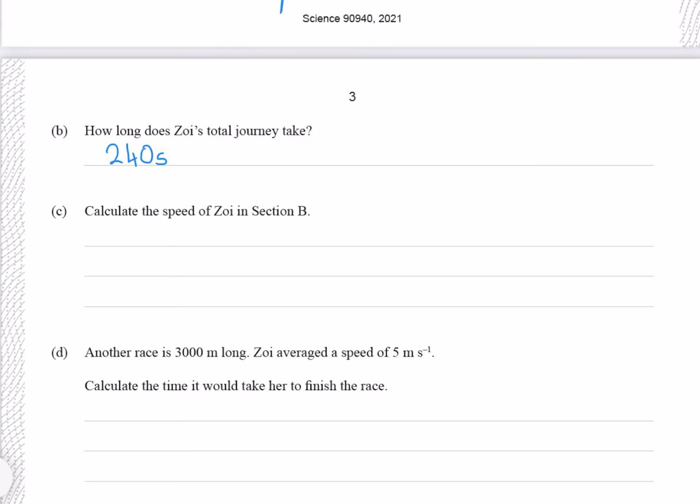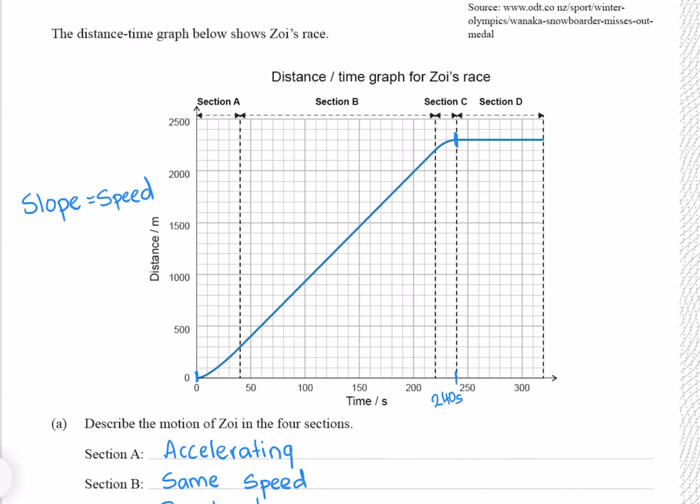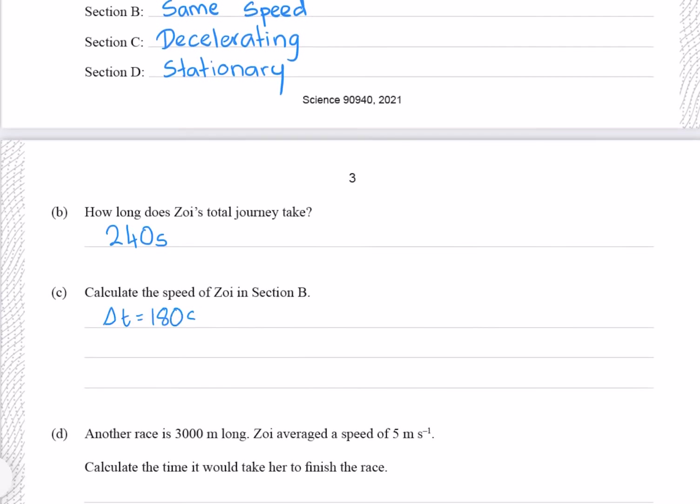Question C: Calculate the speed of Zoe in section B. To calculate the speed, we need the change in distance and the change in time. Our time starts at 40 seconds and finishes at 220 seconds, giving us a change in time of 180 seconds. Our distance starts at 300 meters and finishes at 2200 meters, giving us 1900 meters. Speed equals distance divided by time, which is 1900 divided by 180, which gives me 10.56 meters per second to four significant figures.